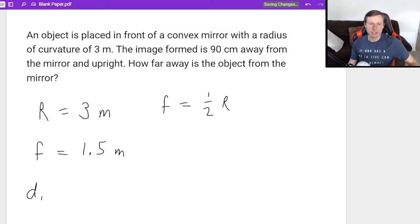Now with the image distance, they do give that to me, the image distance they say is 90. But that's centimeters, I do want to convert this to meters, 0.90 meters. And now I want to solve for DO.